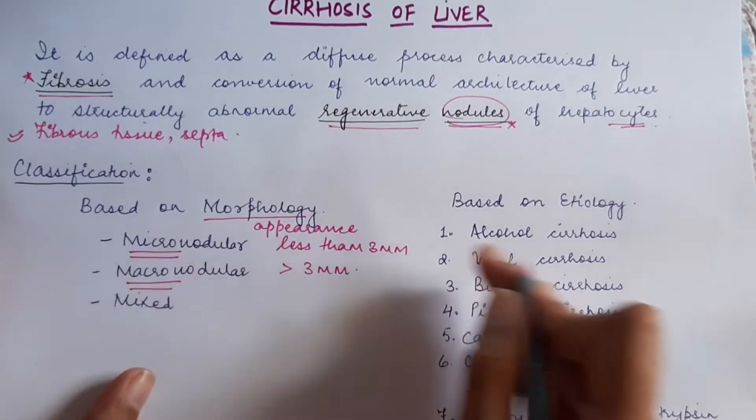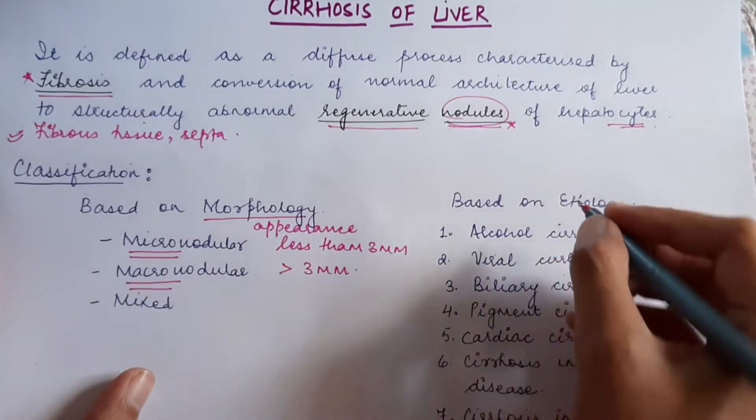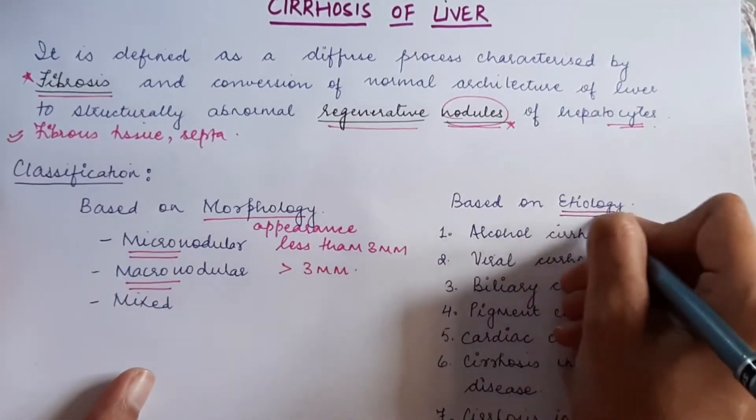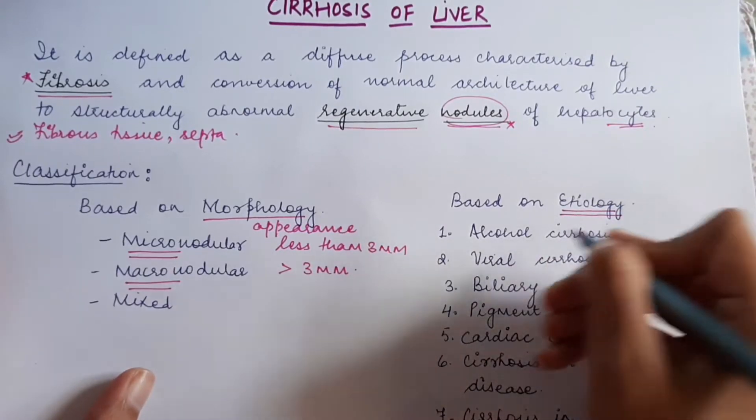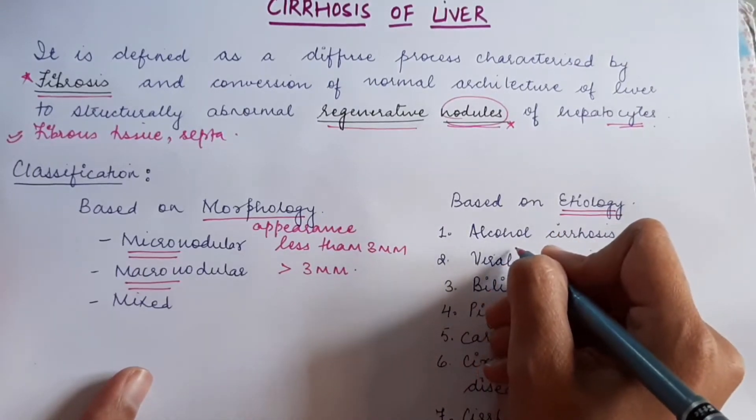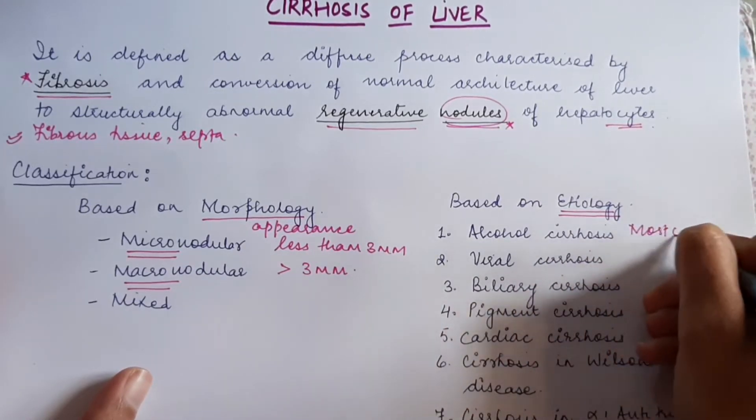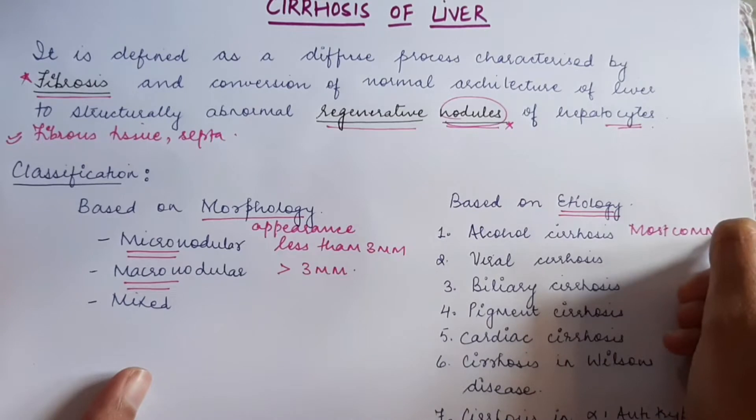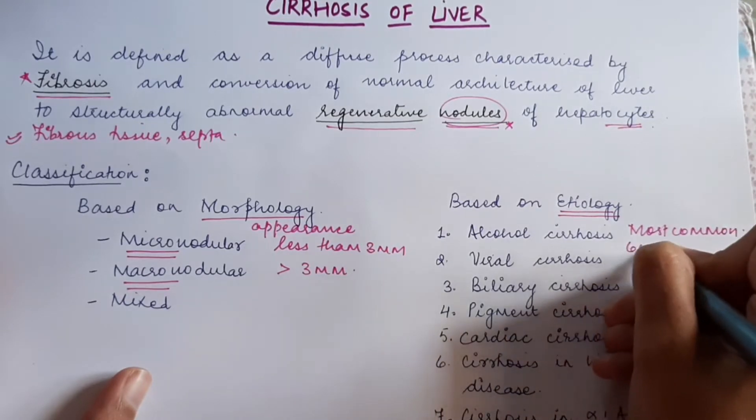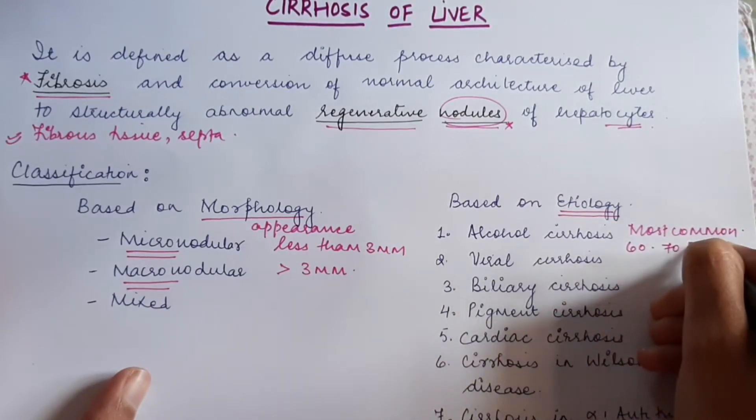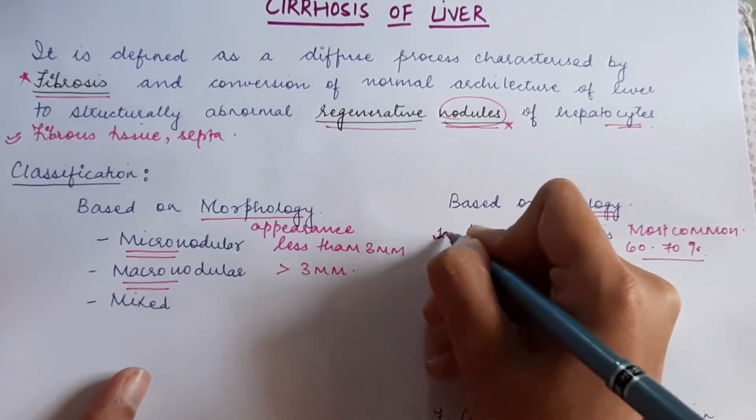Now, the other classification is based on the etiology, the cause behind the cirrhosis. It can be because of alcohol consumption, known as alcohol cirrhosis. This is the most common type. Almost 60 to 70% of cases are alcohol cirrhosis.